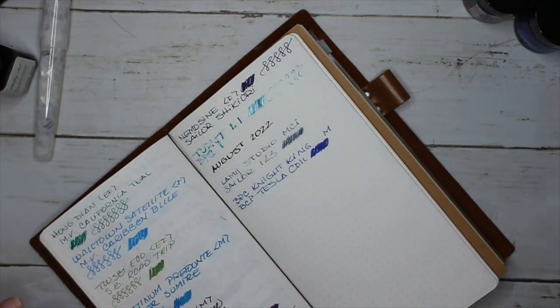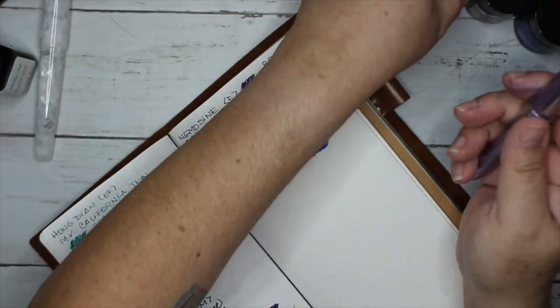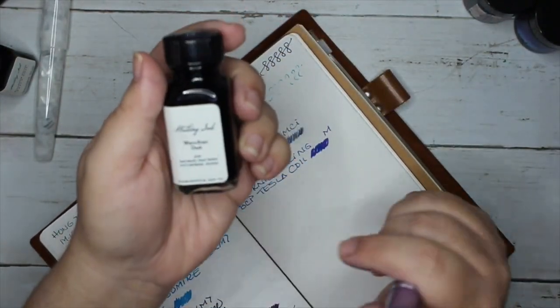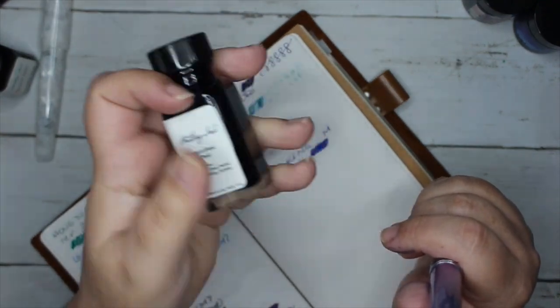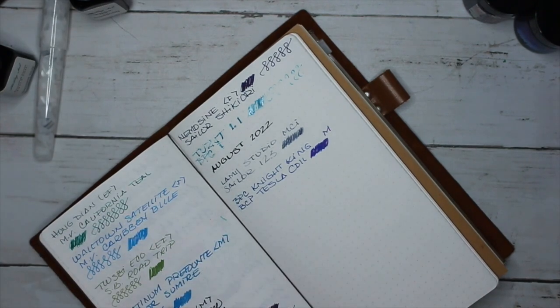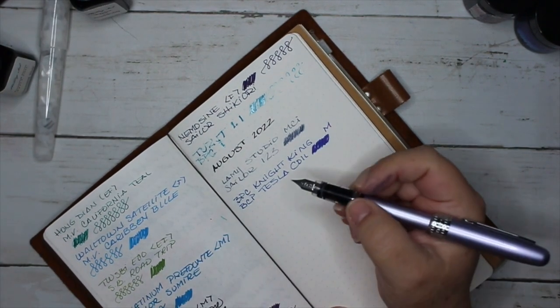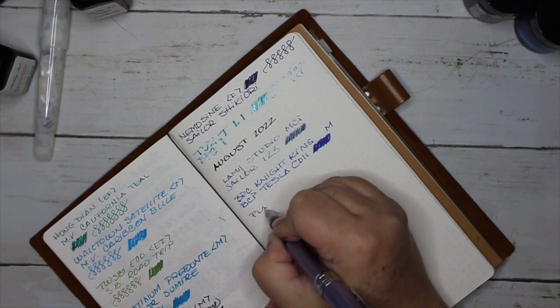Next I have my Platinum Plaisir, and this is also with a Birmingham Pen Company ink. This is Waterfront Dusk. That is the old formula. I think the new one, the color changed from what I hear.